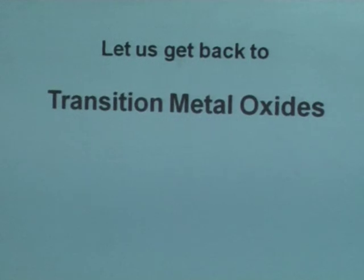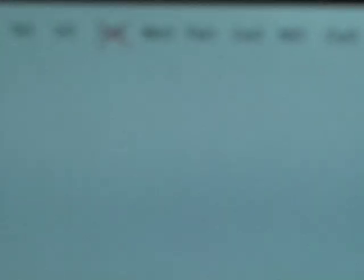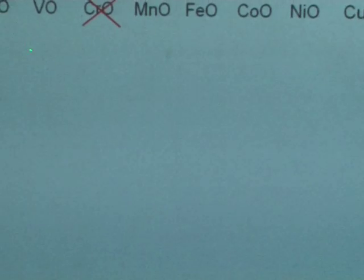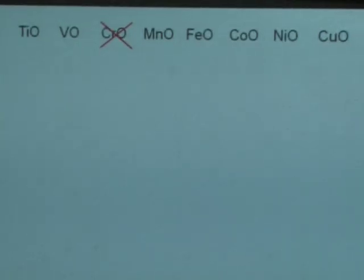But let me get back to giving you a feel for the experimental situation. Because all theory in condensed matter science today, over the last 50 years, is motivated by experimental results. So let's start with the simplest oxides of transition metals. So what I've taken is 3d transition metal, which goes from titanium to copper. And I've taken the oxides: TiO, VO, I've skipped CrO because that doesn't form, MnO, FeO, CoO, NiO, CuO.